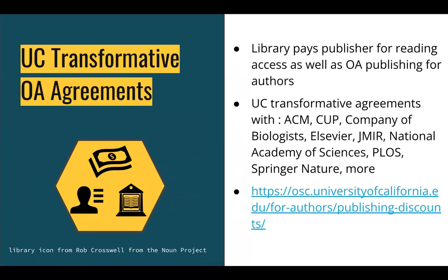Finally, there's a sub-flavor of gold open access called transformative open access agreements. A transformative agreement is where the library agrees to pay a sum to a publisher in exchange for the right to both read all that content and have our institution's researchers be able to publish open access immediately. The University of California has entered into approximately 15 of these transformative open access agreements with a variety of publishers — Elsevier, Cambridge University Press, Springer Nature, and others. You can see the full list on the link provided in the chat.